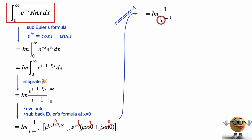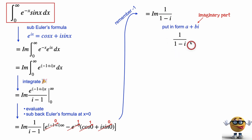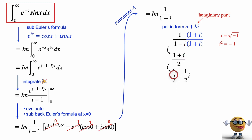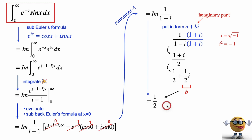We want the imaginary part of this. We need to get it into a plus bi form, where b is the imaginary part we want. To get the fraction into a plus bi form, we multiply the top and bottom by the conjugate. Knowing that i squared equals negative one, if you expand the brackets and simplify, you get one plus i divided by two. We can split this into two fractions: one half plus one half i, where one half is b — that's our imaginary part and the answer to the integral.